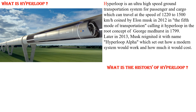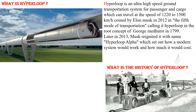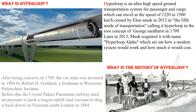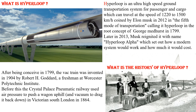What is the history of hyperloop? After being conceived by George Madhurst in 1799, the vacuum train concept was further developed. In 1904, Robert Goddard of Worcester Polytechnic Institute advanced the idea. Before that, the Crystal Palace Pneumatic Railway used air pressure to push a wagon uphill and vacuum to drag it back down, in Victoria, South London, in 1864.